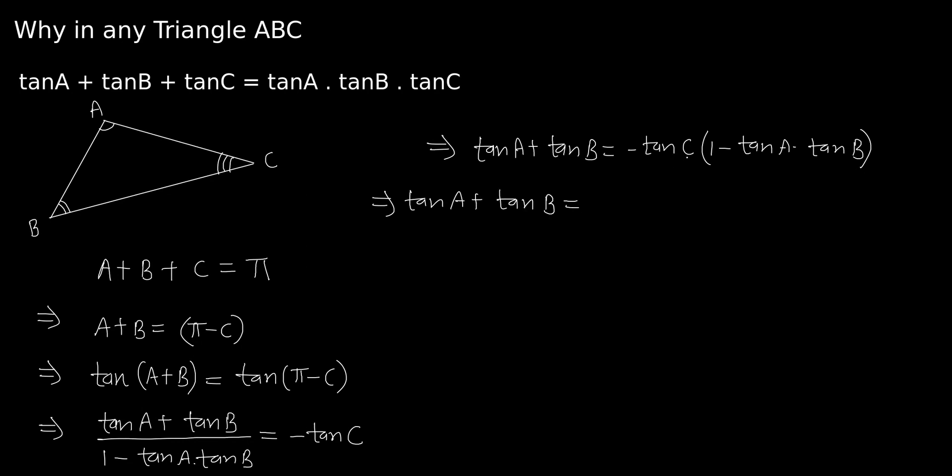Expanding: tan A + tan B = -tan C + tan A · tan B · tan C. Now we can take the -tan C term to the left-hand side.